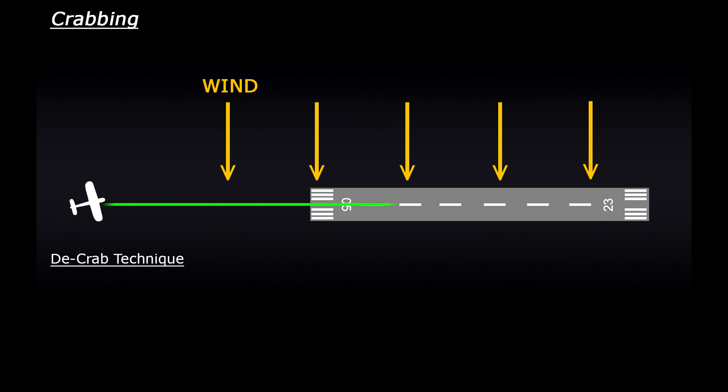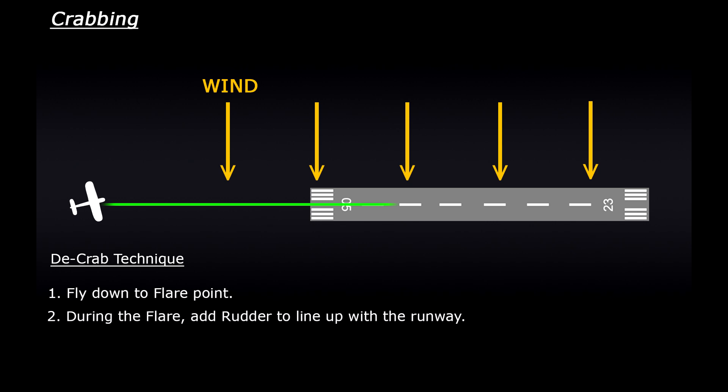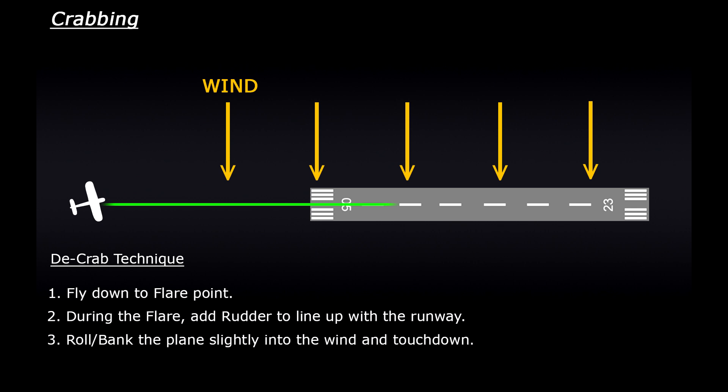The technique would be to fly sideways, or crab, down to the flare point — the point at which you lift the nose to slow the plane down and make sure the main wheels touch down first. As you flare the plane, add some rudder to bring the nose back in line with the runway. In this example, we would need to add right rudder. Then, the third step would be to ever so slightly roll the plane into the wind to remain straight and touch down.